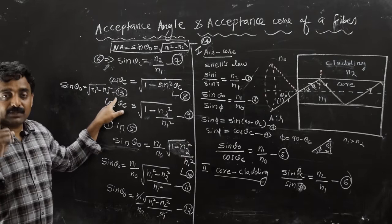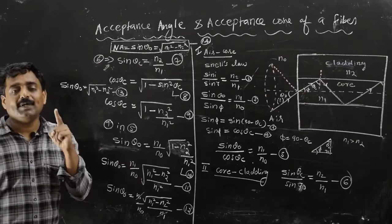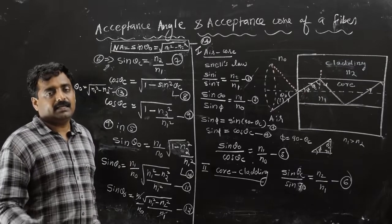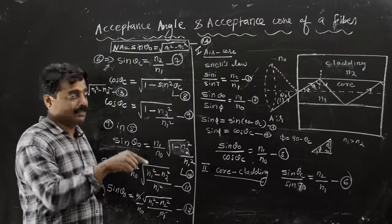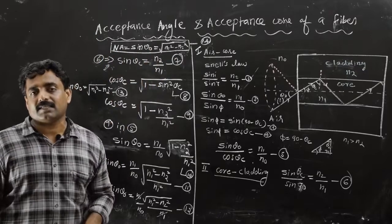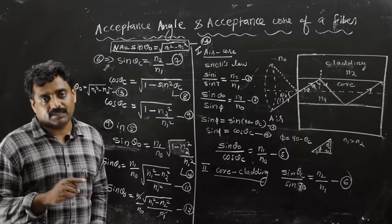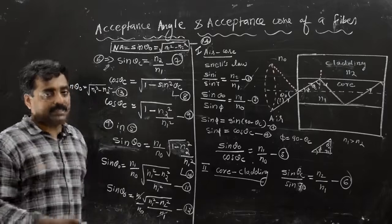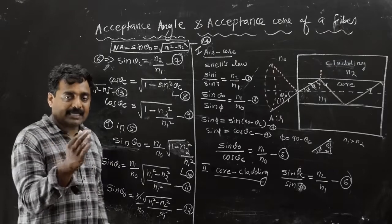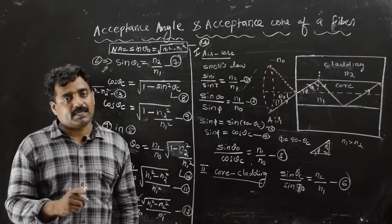This is sin theta 0, which is the numerical aperture — the sine of the acceptance angle. The acceptance angle is theta 0, and its two-dimensional form is the acceptance cone. Numerical aperture equals sin theta 0 equals the square root of (n1 squared minus n2 squared). This is the expression for numerical aperture.